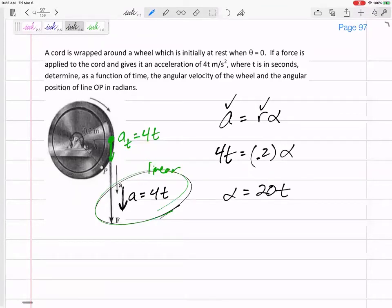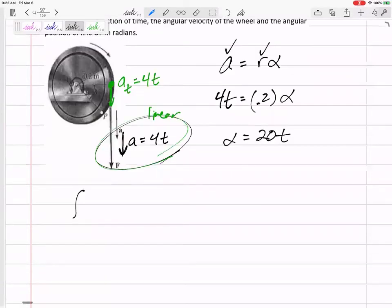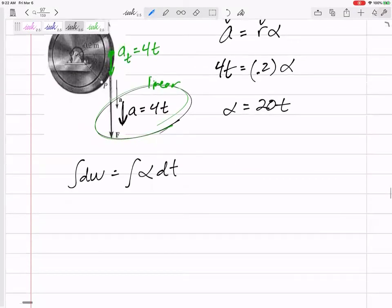So if alpha is 20t and we want to find angular velocity as a function of time and angular positions, a derivative or an integral, if we're given acceleration, angular acceleration, we want to find angular velocity and position. Those would be integrals. I apologize, I didn't go ahead and print out the formula sheet. I did unhide that from you. I think it's on canvas. I think you can print it out on your own if you want.